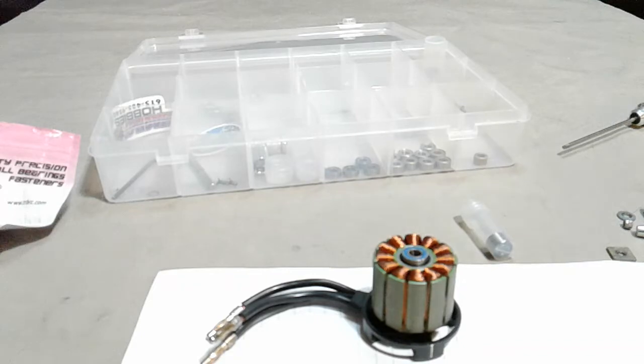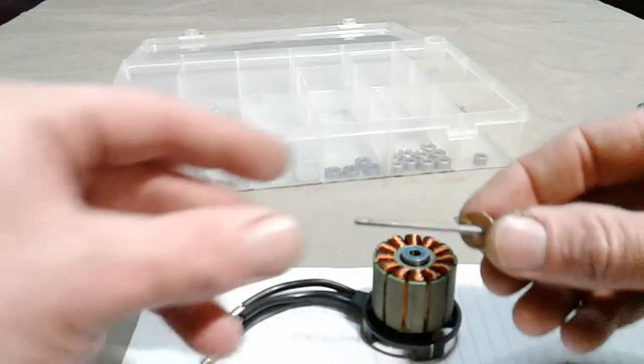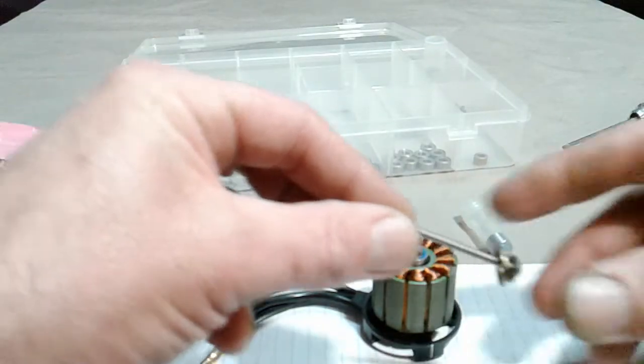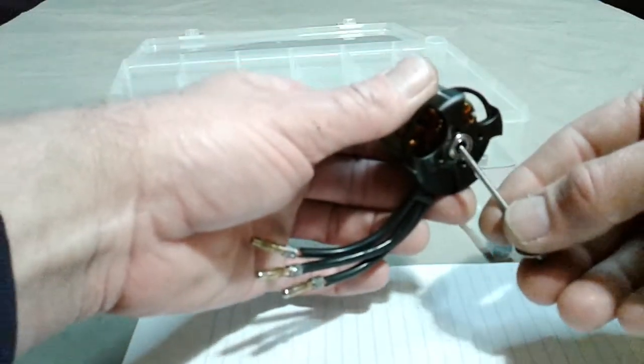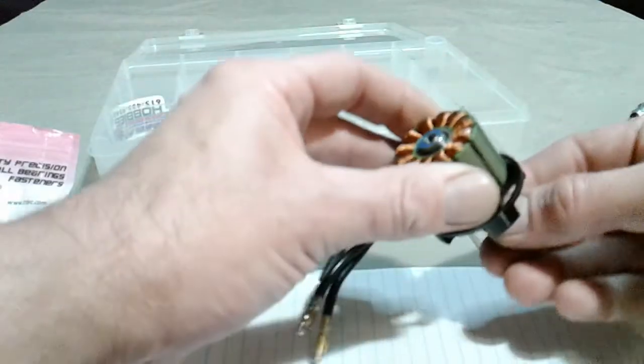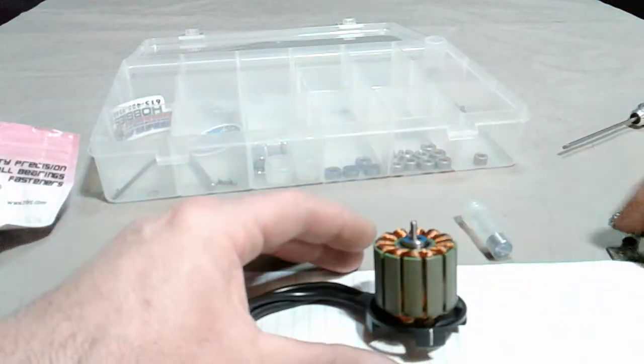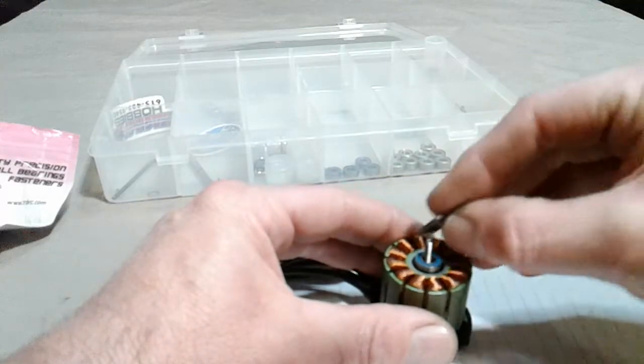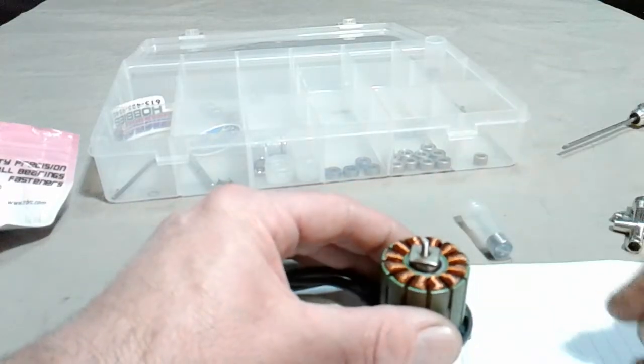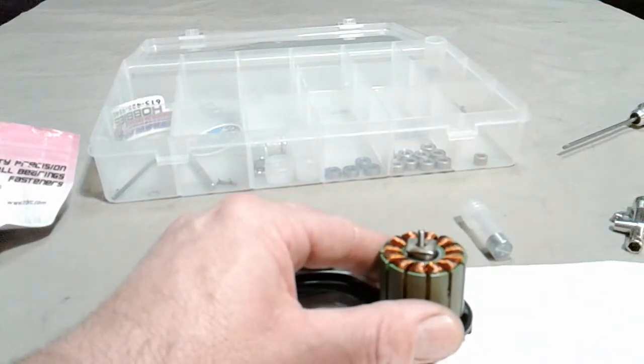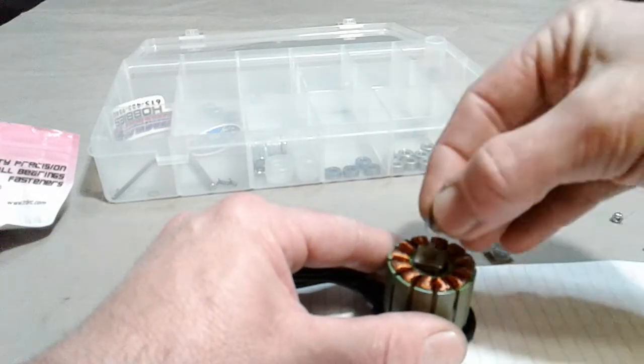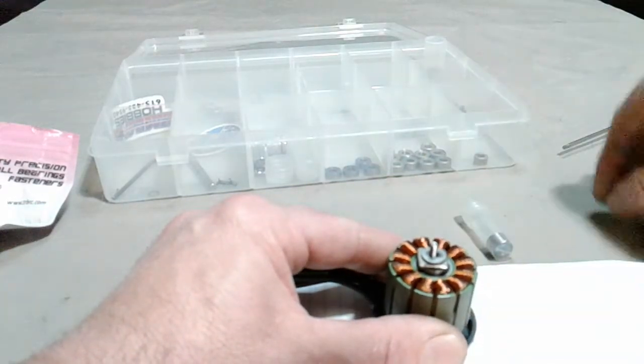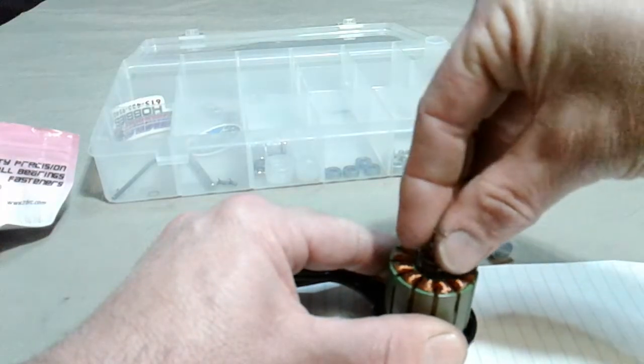All right, so I've got a long screw here with a couple washers and we're gonna make a threaded press. And then you need a washer that covers the entire bearing flat where it's gonna press.